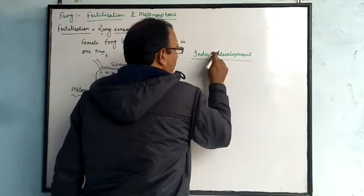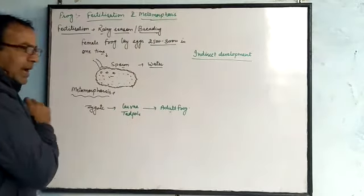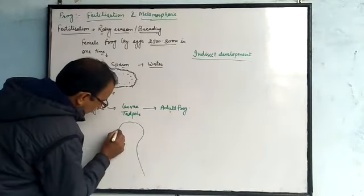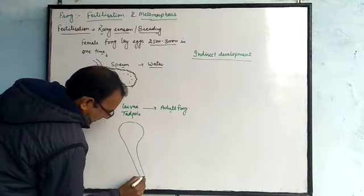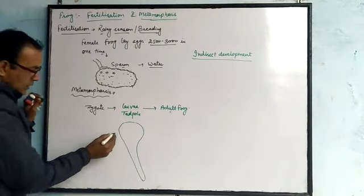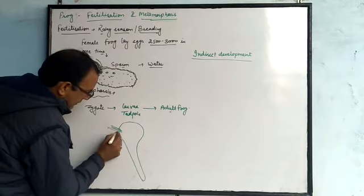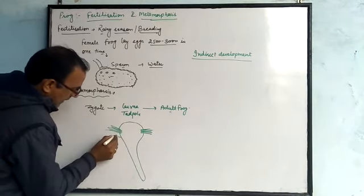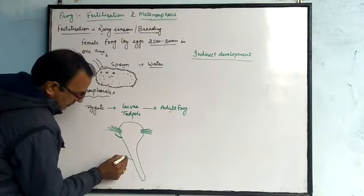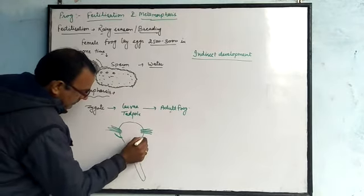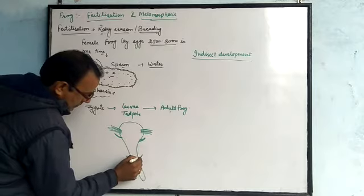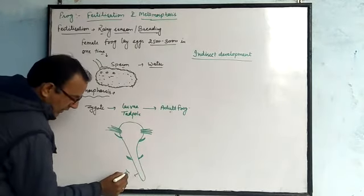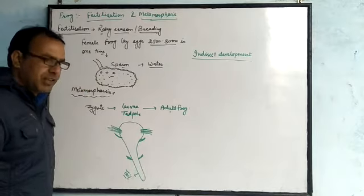The larvae consist of fin-like structures. They have gills, as well as limbs, and they contain a large tail. So a larva consists of a large tail along with gills and limbs.